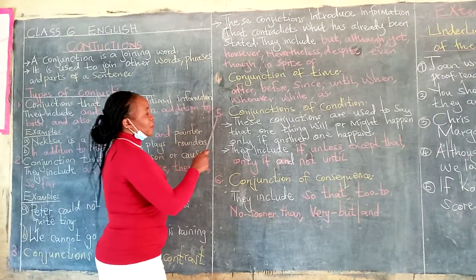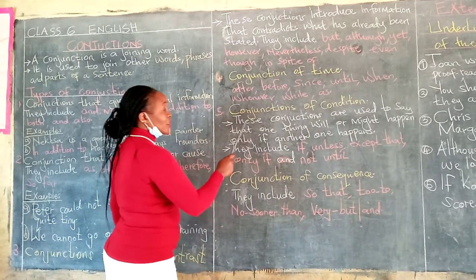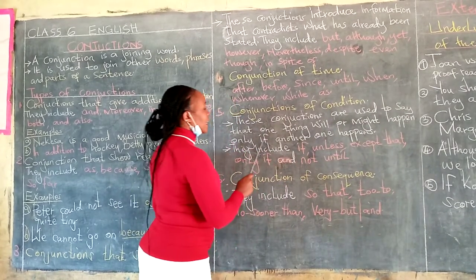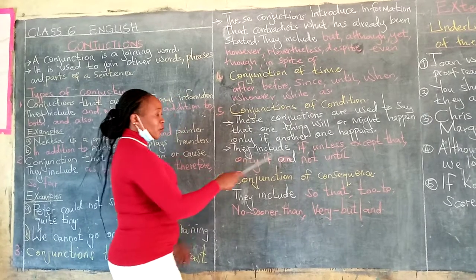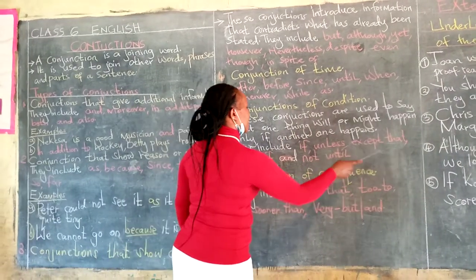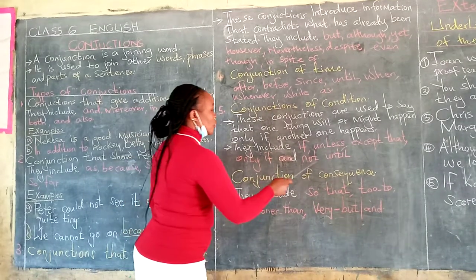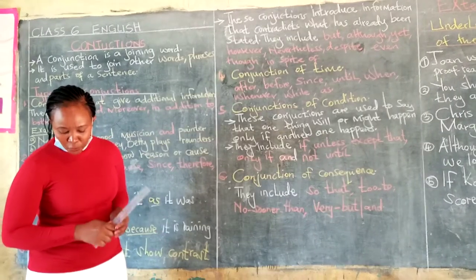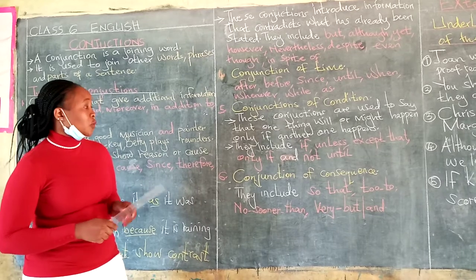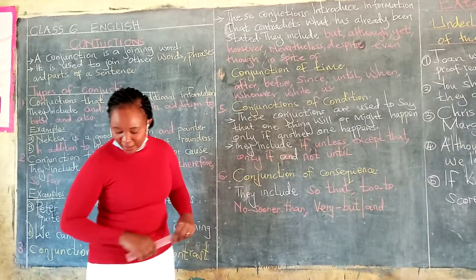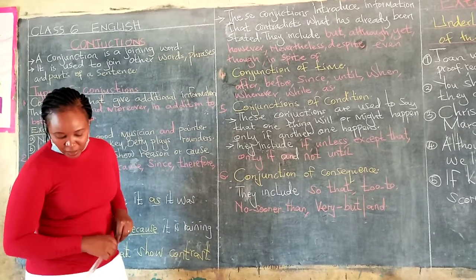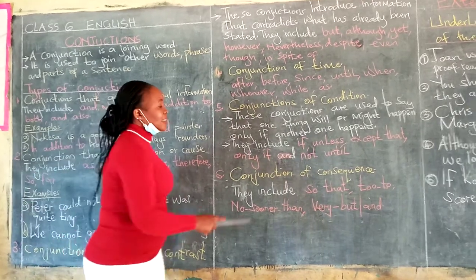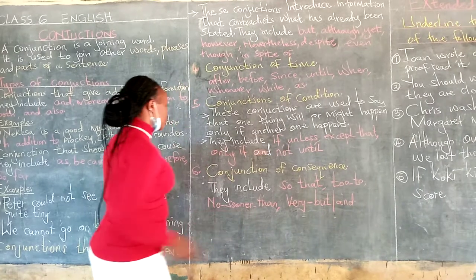We have the fifth one: conjunctions of condition. Now, these conjunctions are used to say that one thing will or might happen only if another one happens. They include: if, unless, except that, only if, and not until. Go through your notes if you want to pass the exam — so the word 'if' is our condition conjunction. A driver will cause an accident unless he drives carefully — so we have 'unless' as a conjunction in our sentence.